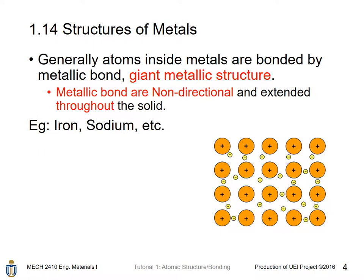Metals, as the name suggests, have atoms bonded by metallic bonds, and their structure is a giant metallic bond. Metallic bonds are non-directional and extend throughout the solid. Examples include iron and solid sodium.